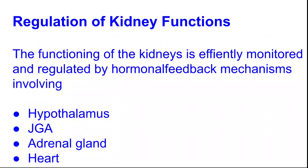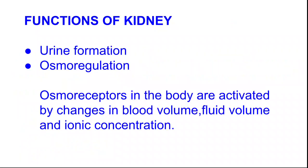Before analyzing the regulation process, let's see what functions are performed by the kidney. The first function is urine formation and osmoregulation. Osmoregulation is a mechanism to regulate the body fluid volume and concentration of ions. For this, our body has osmoreceptors, which can detect any change in the volume of body fluids, blood volume, and the concentration of ions.